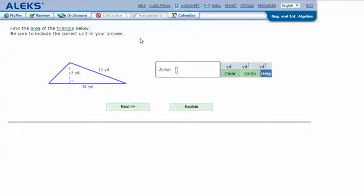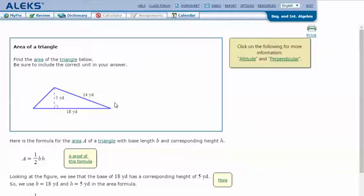Let's click explain. The formula for area of a triangle is half of the base times height. To find the height, it's where this vertex comes down and intersects with the base at a right angle.